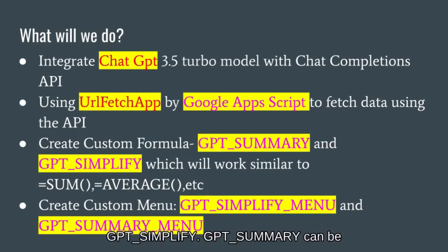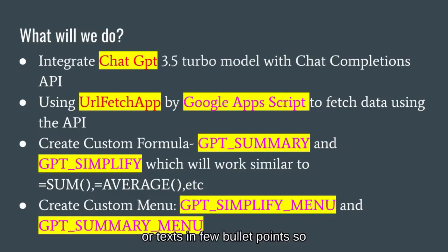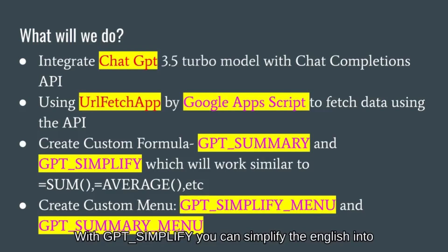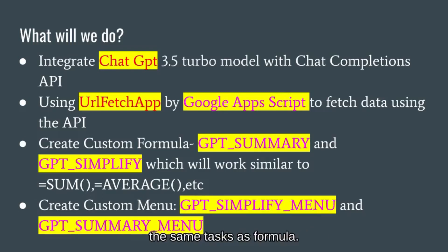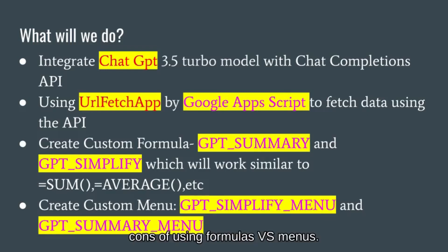GPT Summary can be used to summarize a big chunk of passage or text into a few bullet points so that it's efficient to read. With GPT Simplify you can simplify English into easy-to-read English. We will also create menus which perform the same functions as the custom formulas, and we will discuss the pros and cons of using formulas versus menus.